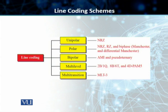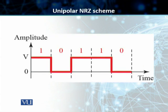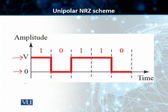Let's start looking at these techniques and we'll start with the unipolar non-return to 0. Students, as you can see on the slide, in this line coding technique, all the signal levels are on one side of the time axis. The signal levels are either above or below this time axis. In this particular case, we have got two levels: a level V and a level 0. There are no voltage levels below the time axis.